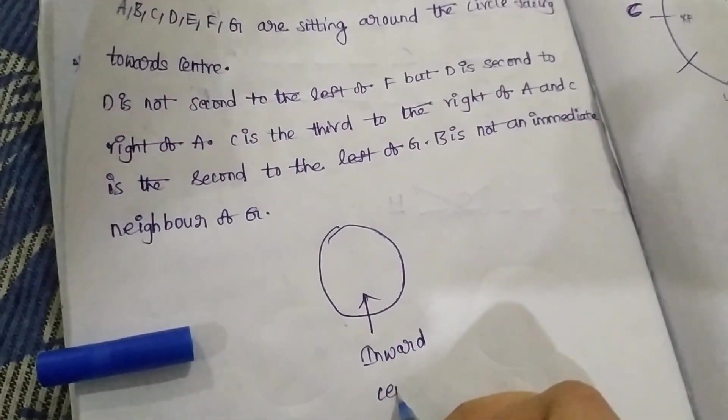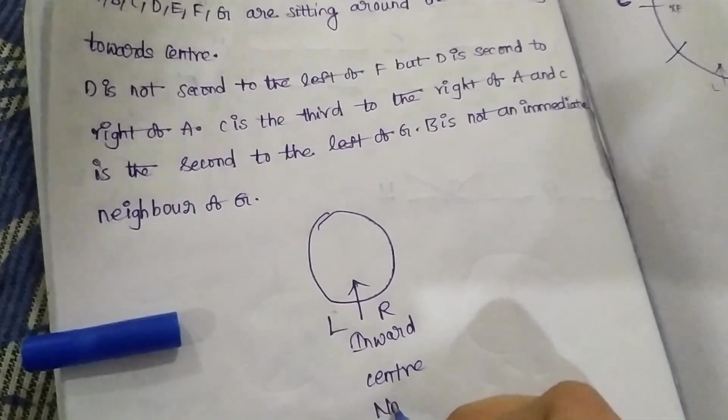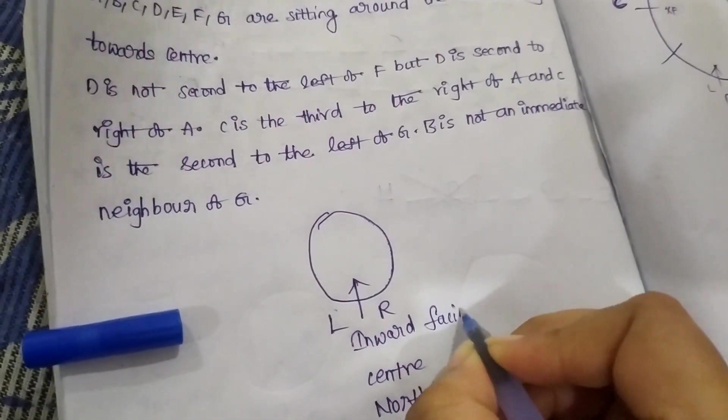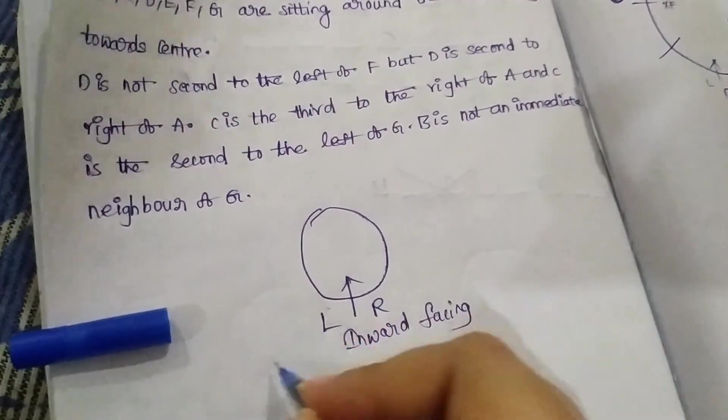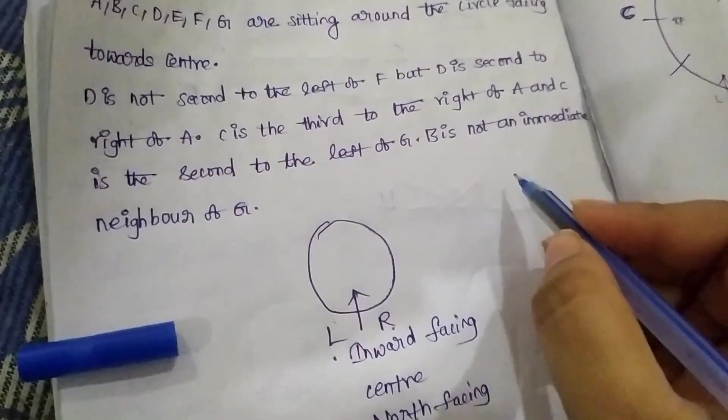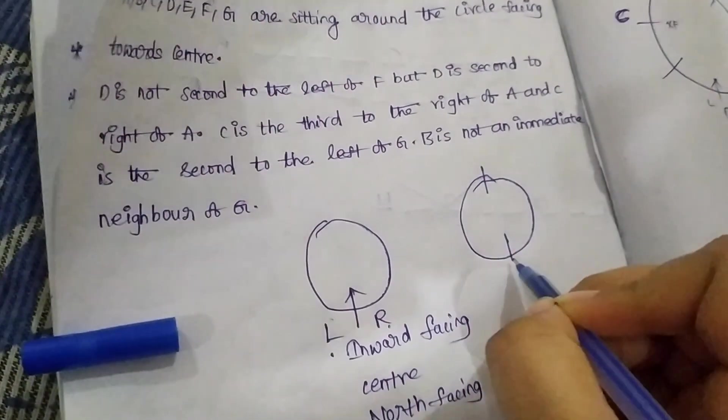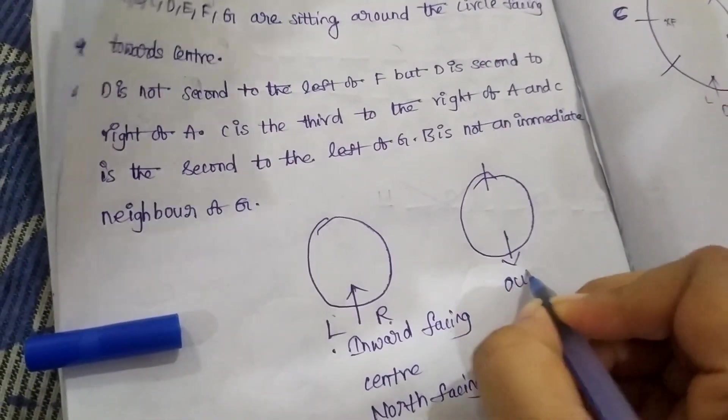Inward center: it left, it right, north facing. Inward facing center, north facing. It left us, it right us. Next, south, outward facing.